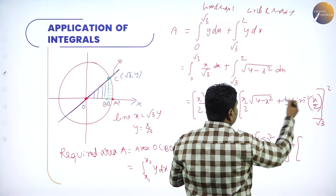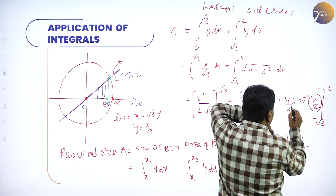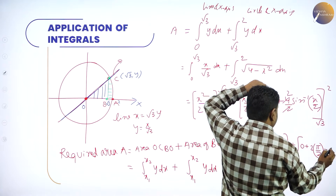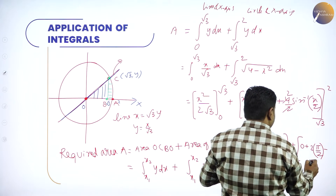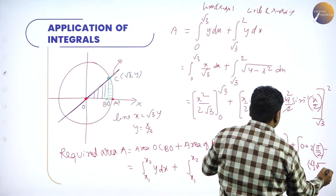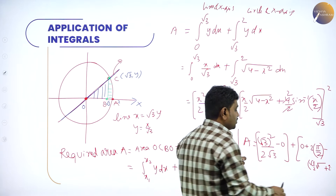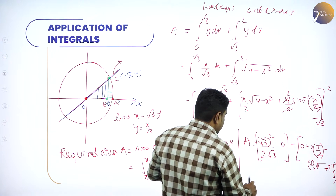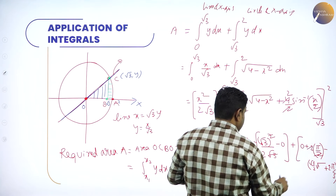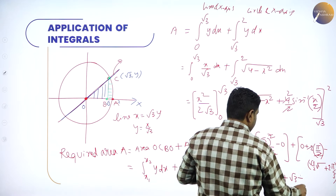Applying limits: for the first integral, upper limit √3 gives (√3)²/(2√3) = 3/(2√3) = √3/2; lower limit 0 gives 0. For the second integral, at upper limit x = 2: (2/2)√(4−4) + 2·sin⁻¹(1) = 0 + 2·(π/2) = π. At lower limit x = √3: (√3/2)·√(4−3) + 2·sin⁻¹(√3/2) = (√3/2)·1 + 2·(π/3) = √3/2 + 2π/3. So the second integral = π − (√3/2 + 2π/3).